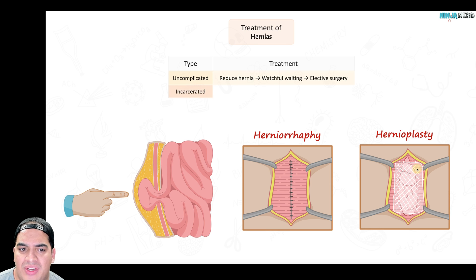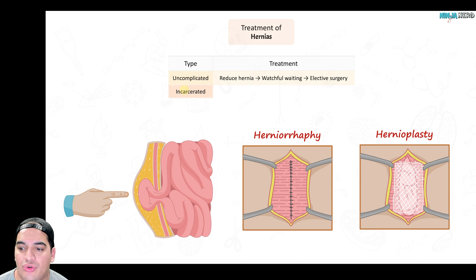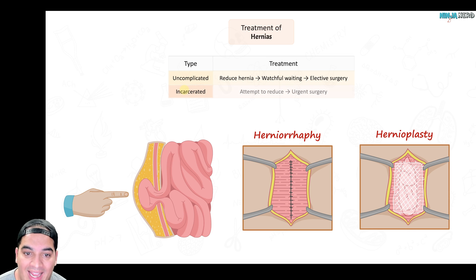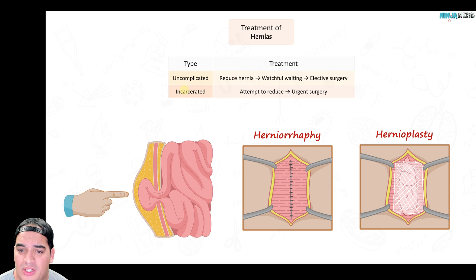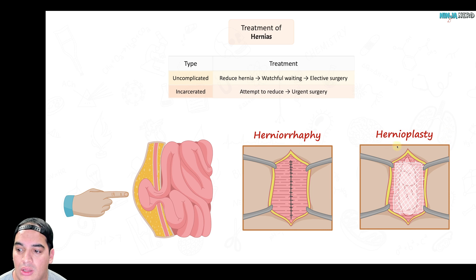If the hernia is incarcerated but not causing bowel obstruction or bowel ischemia, attempt manual reduction with pain medication to relax the patient. If reduction is still unsuccessful, refer for urgent surgical evaluation — either an urgent herniorraphy for small hernias in children or an urgent hernioplasty for large or inguinal hernias.